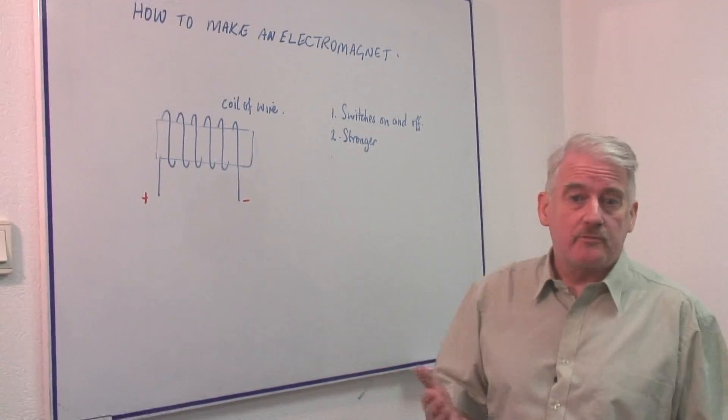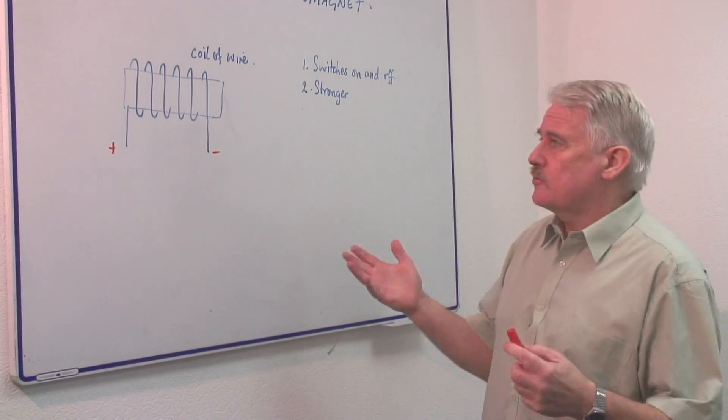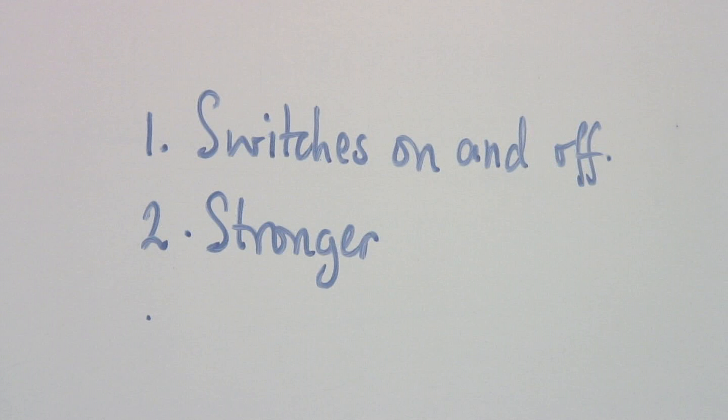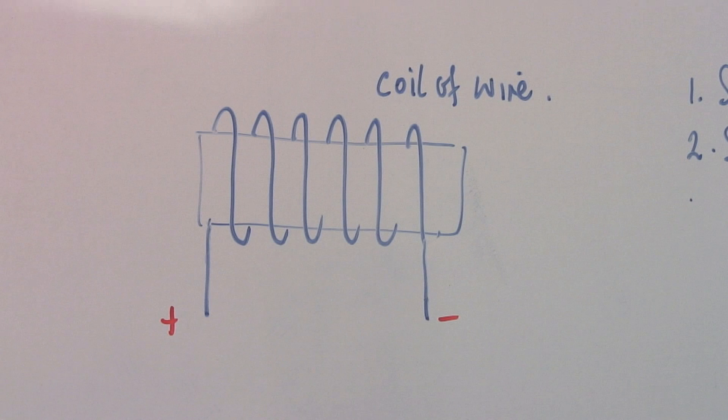First of all, why would we want to make one? An electromagnet has advantages. It can be switched on and off, which is why we would use an electromagnet rather than a permanent magnet.